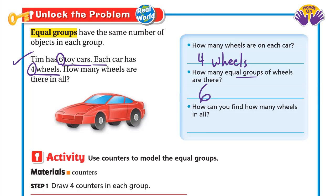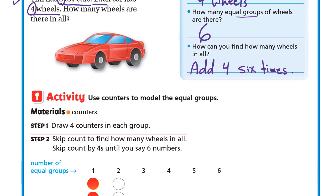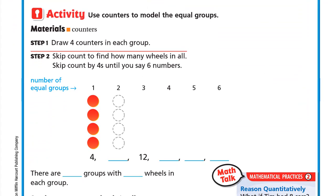We can add four six times. Let's look at the activity to see how we will add four six times. We'll use counters to model the equal groups.